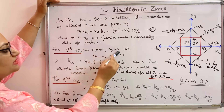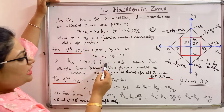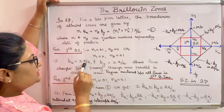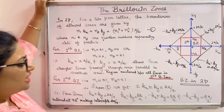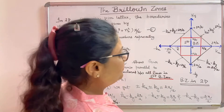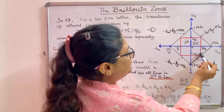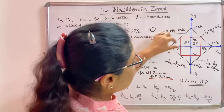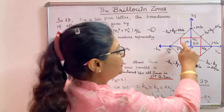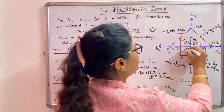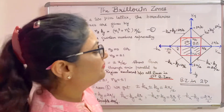Putting these values into the equation, we get kx equal to plus or minus pi by a, and ky equal to plus or minus pi by a. This gives four straight lines parallel to the respective axes. The region enclosed between all four lines — kx equal to plus pi by a, ky equal to plus pi by a, ky equal to minus pi by a, and kx equal to minus pi by a — represents the first Brillouin zone, which is a square in shape.